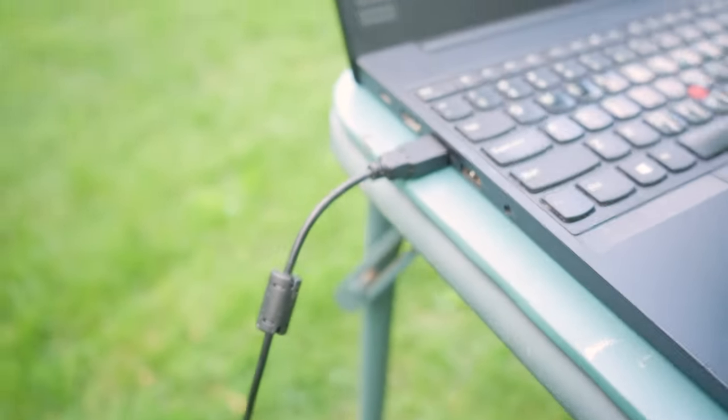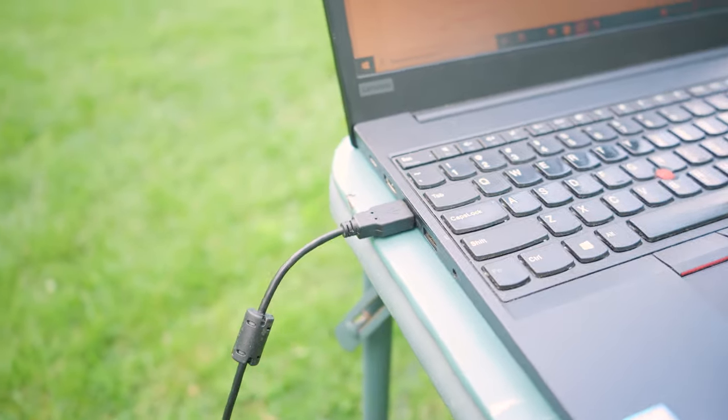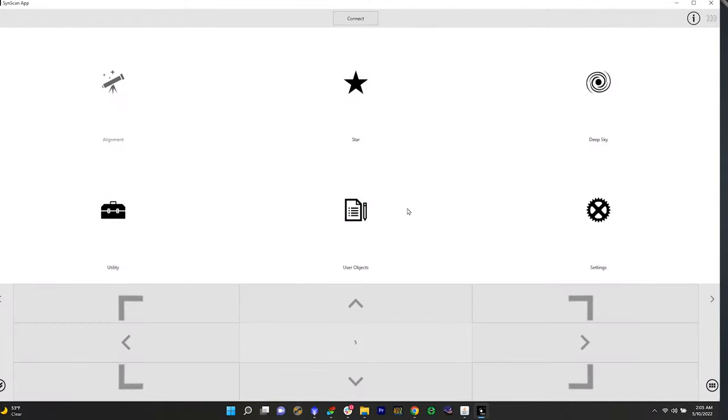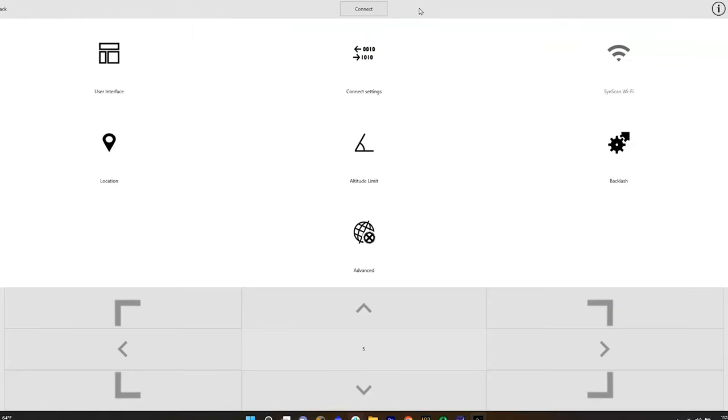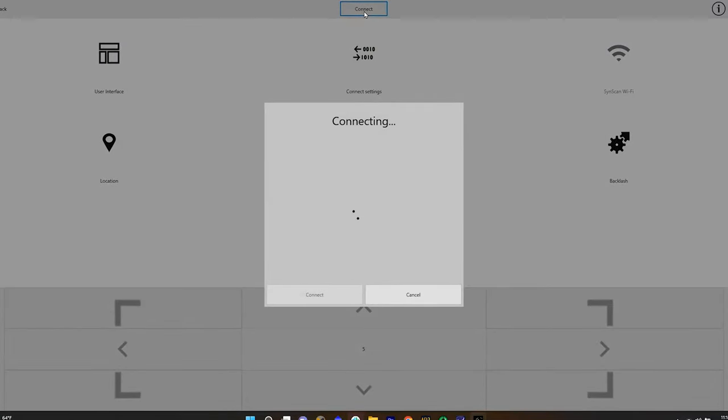Now you can go ahead and power on your GTI and connect your USB cable from the mount to your laptop. Open the app in your laptop and under the settings tab go to connections and change your connection type to serial. You should then be able to hit connect in your app and then from there you will have full control within the app to control your mount.